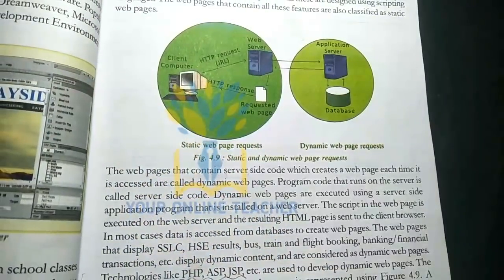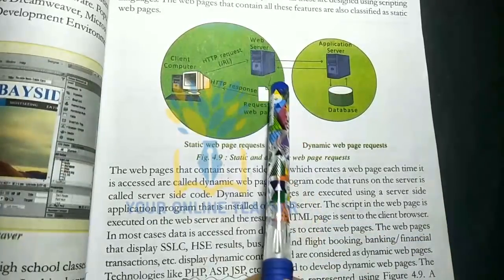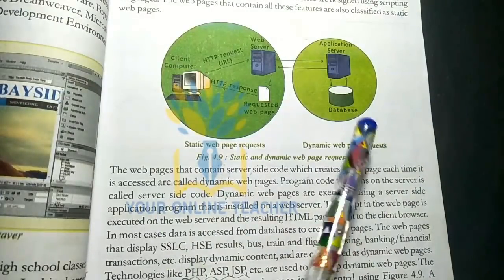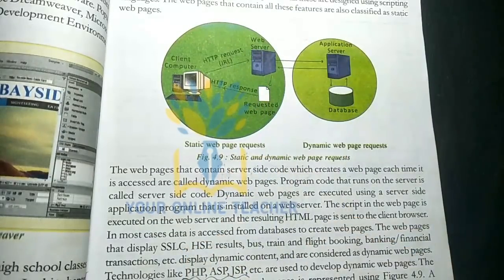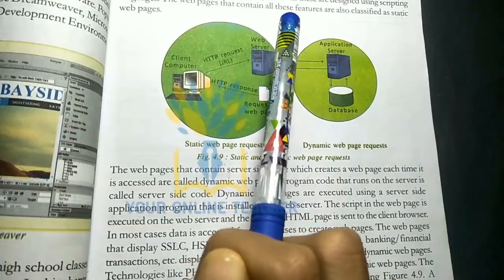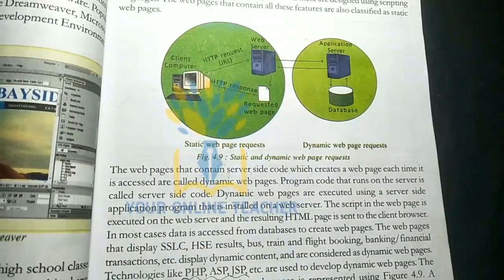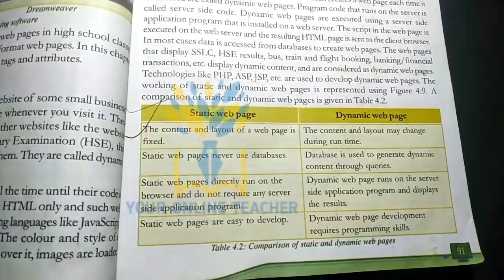If you request a web page, the server will respond. This is the dynamic web page flow: the client side of the computer sends a request to the application server. The application program connects to the database and returns the result to the client's computer. The database makes it easy to develop dynamic web pages.